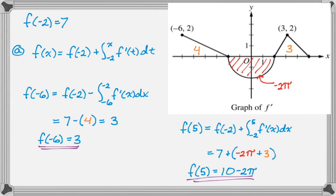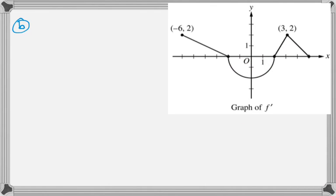The next part of the question is on what intervals is f increasing and justify your answer. So this is very straightforward. f is increasing when f prime is greater than 0. And then we just look at the graph and recognize that from negative 6 to negative 2, we're above the x-axis, which means f prime is positive, which means f is increasing. And then also these two other parts, from 2 to 3 and also from 3 to 5.